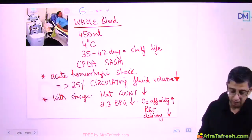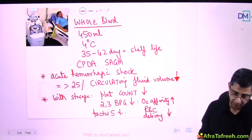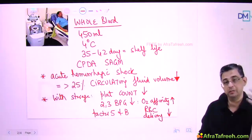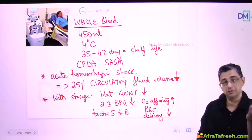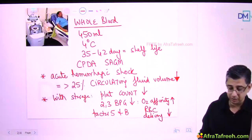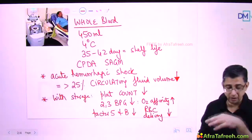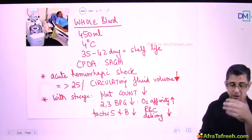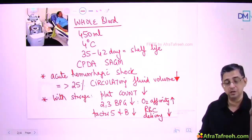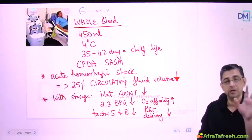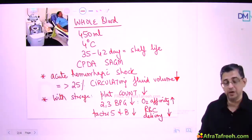Levels of labile clotting factors will also reduce - that is factor 5 and factor 8. If a person has a bleeding diagnosis, whole blood alone is not sufficient - we may have to give fresh frozen plasma, which is one of the richest sources of clotting factors, because stored blood does not have factor 5 and factor 8. That is why nowadays we prefer packed RBCs, as the rise in hematocrit with packed RBCs and whole blood is identical.